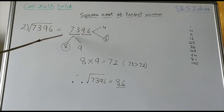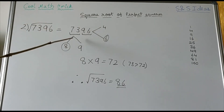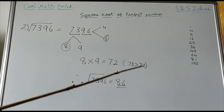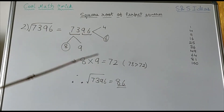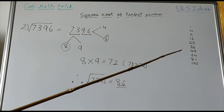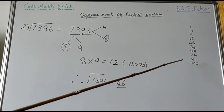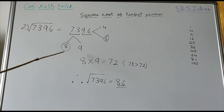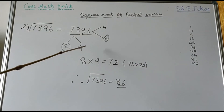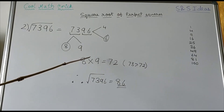Now let us move on to the second group, which is 73. Between which two numbers does 73 lie? It is 64, which is 8 squared, and 81, which is 9 squared. So here I have written the two possibilities of the tens place of our square root.